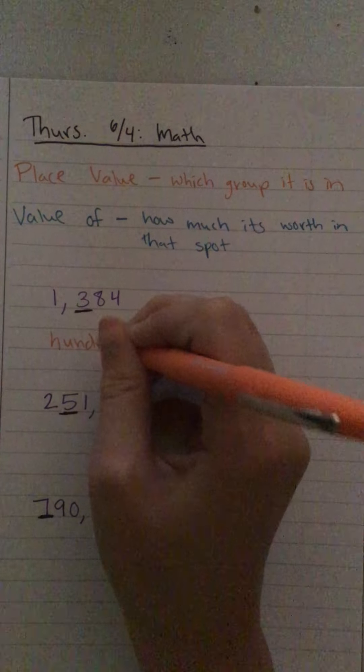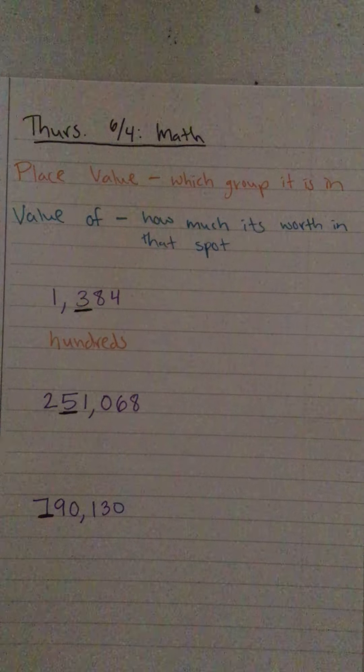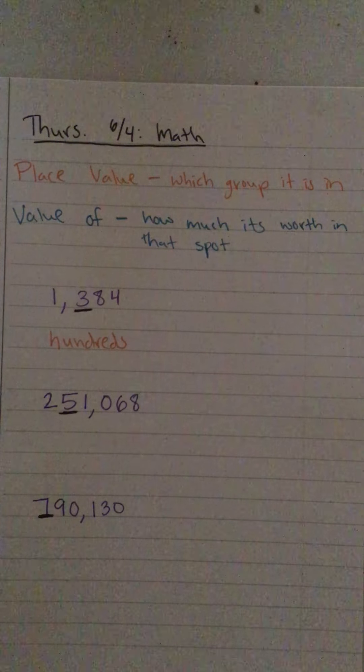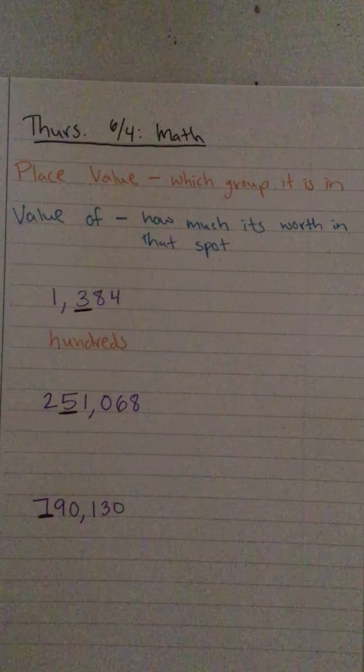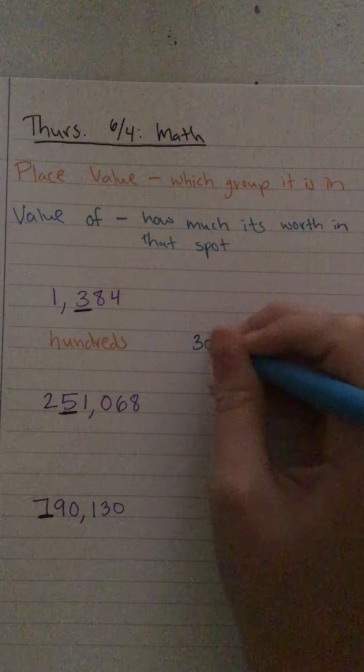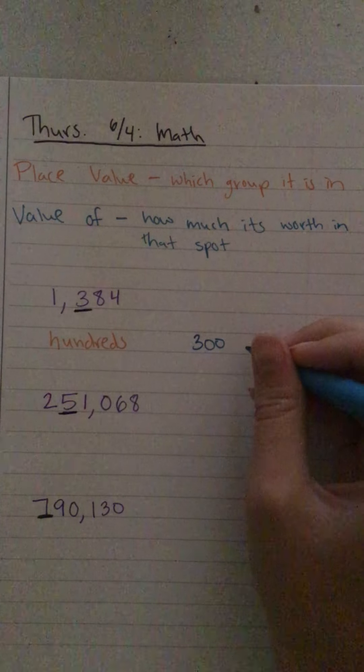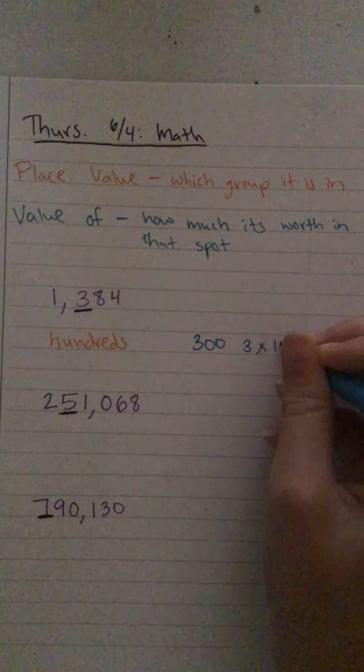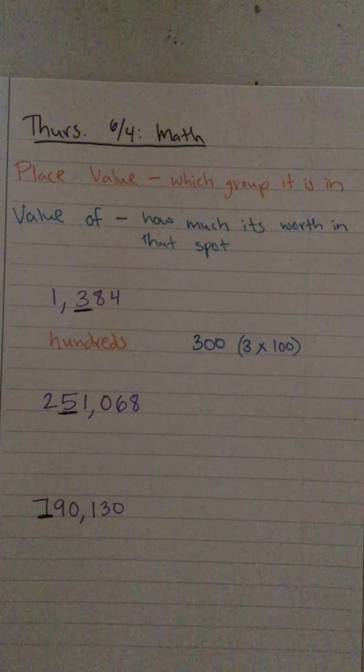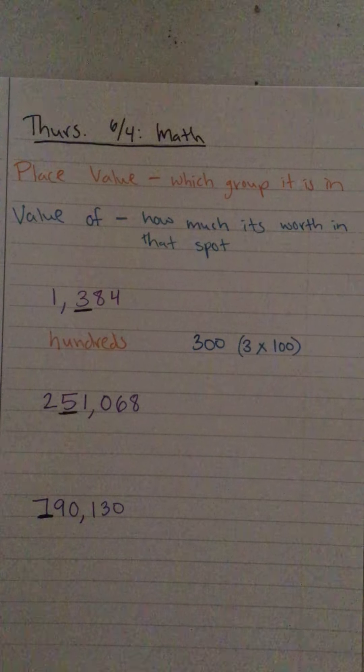But then the value of that three is three hundred, because if the three is in the hundred spot, it's like saying three times one hundred. Okay, let's look at this next one.